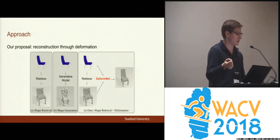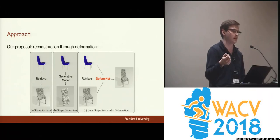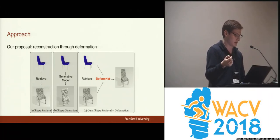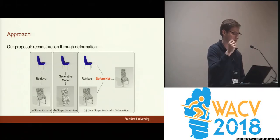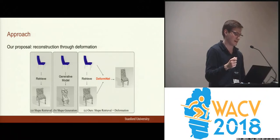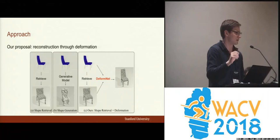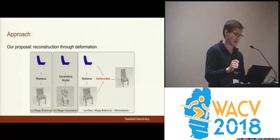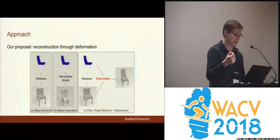Then beyond that is the generative model, where you go from image to reconstruction — that's what most current research does. And that one is hard because you need to, just from a single image, infer all the properties of the object from scratch. Current techniques don't do so well with this, so maybe there's a simplification. And that's the third approach, our approach, which is shape retrieval plus deformation.